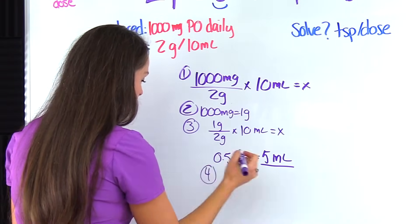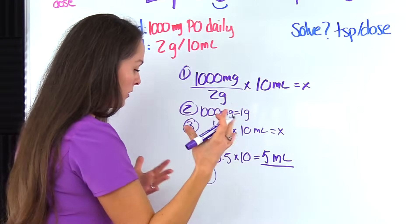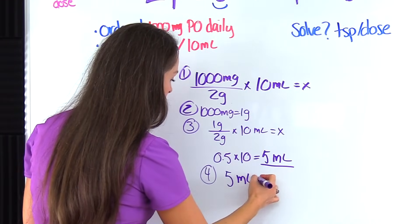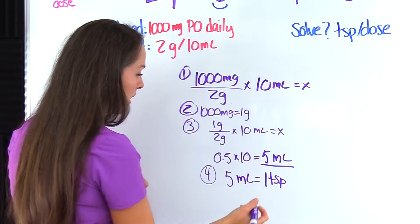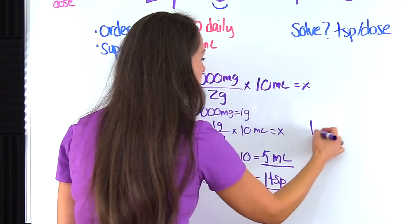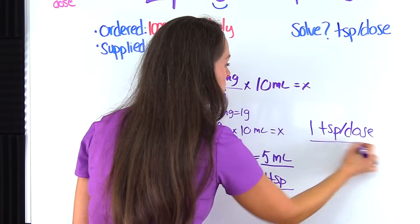So we'll go down here to step four. So we know again from the metric table, think back with mls and teaspoons, how many is what we know just right off the bat that 5 milliliters equals one teaspoon. So our answer is one. So one teaspoon per dose is what this patient needs.